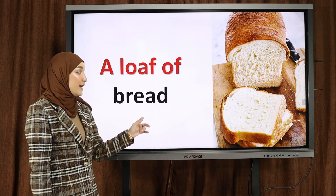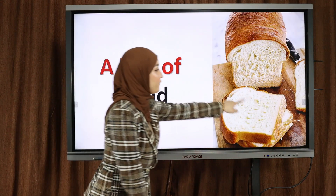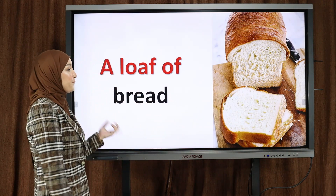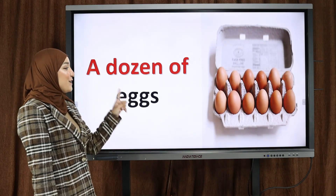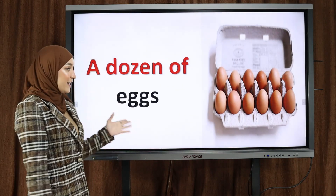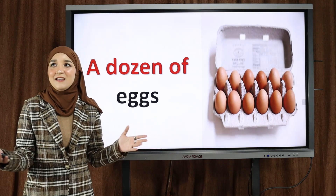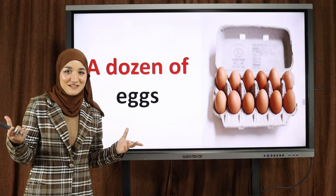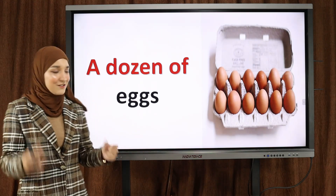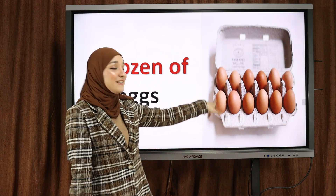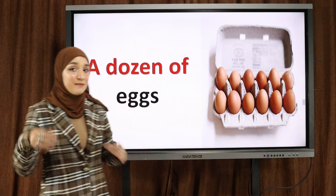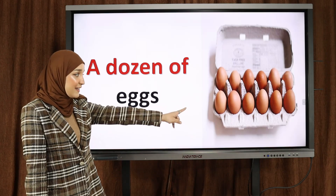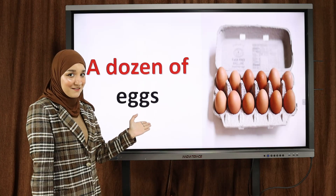A loaf of bread — رغيف من الخبز. Next picture: a dozen of eggs — a dozen means 12 — تعني اثنى عشر من شيء. في الدارج الجزائري نقول تزينا. So a dozen of eggs — here we have 12 eggs — اثنى عشر بيضة.